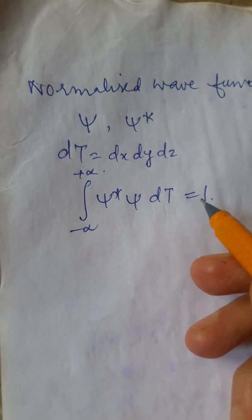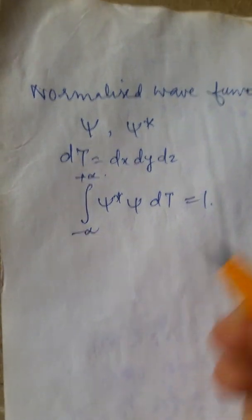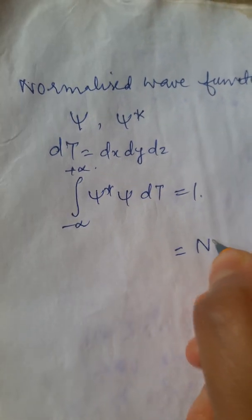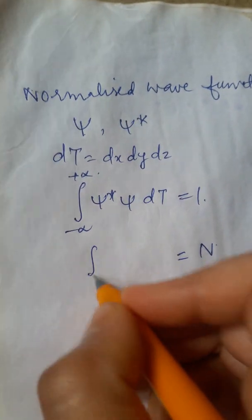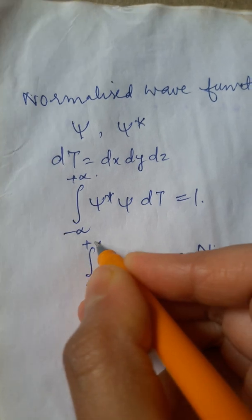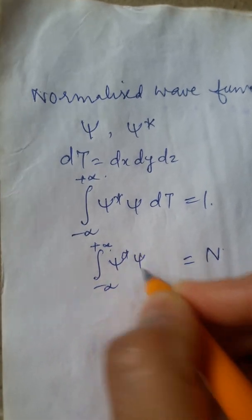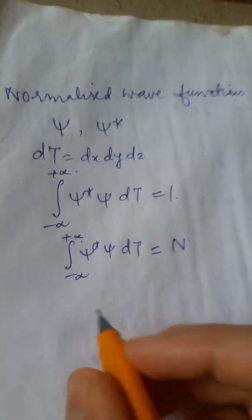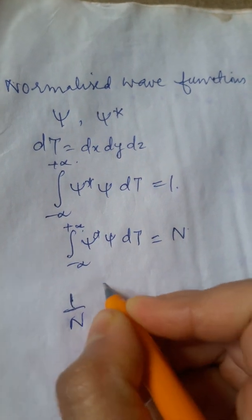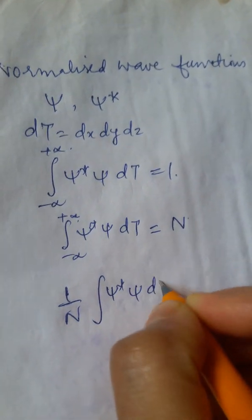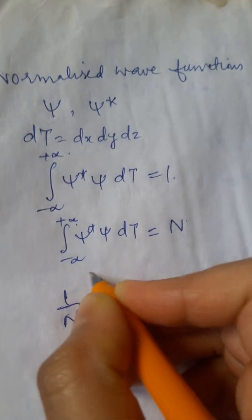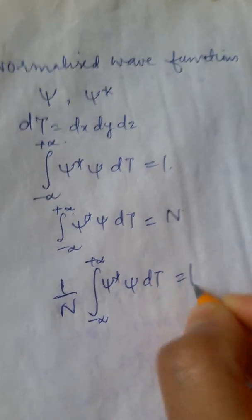However, sometimes when we actually perform this integration, we may not get 1 but a constant, say N. In that case, what we do is bring this N on the left side to have 1 on the right side, that is (1/N)∫ψ*ψ dτ from minus infinity to plus infinity equals 1.